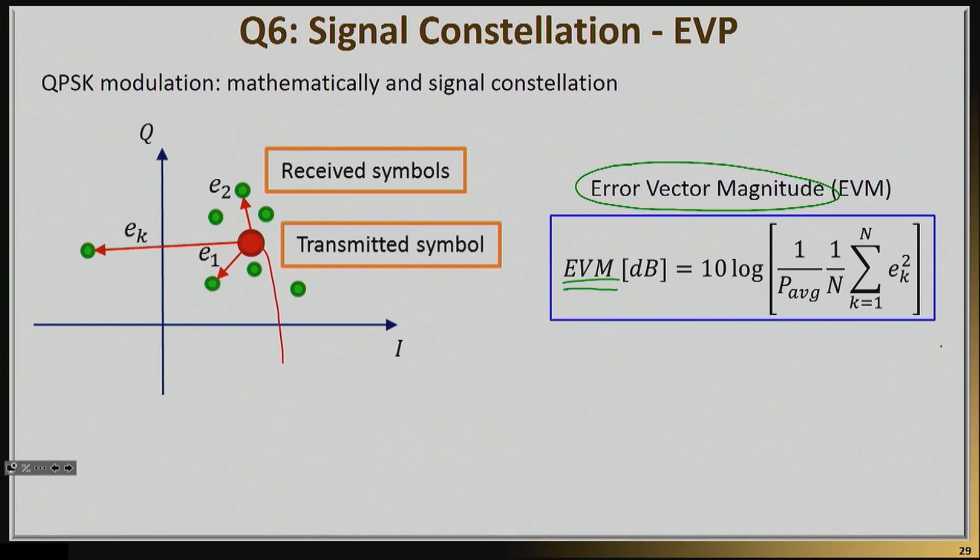This is the symbol that I'm expecting to receive. Let's say the desired symbol. And all the green dots is what I'm actually getting. So there's going to be a geometrical distance between the green dot here and the symbol that I want in transmission number 1. There's going to be a different geometrical distance in transmission number 2 or in transmission number k. So I can do a bunch of these transmissions and then I can basically sum up all of these distances.